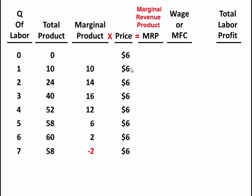So let's go ahead and calculate that. The marginal revenue product values are: 0, 60, 84, 96, 72, 36, 12, and minus 12.